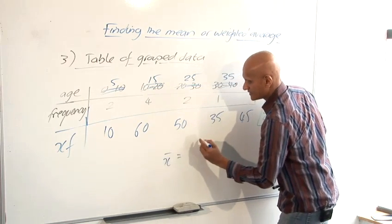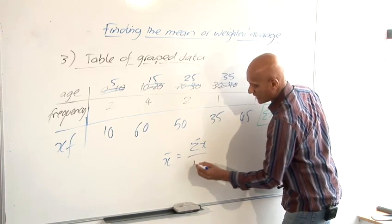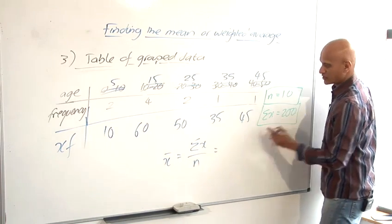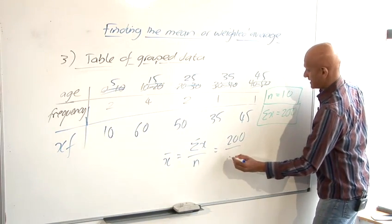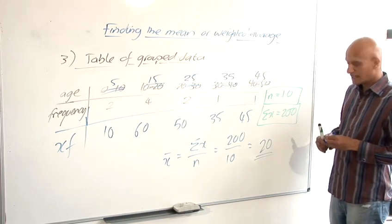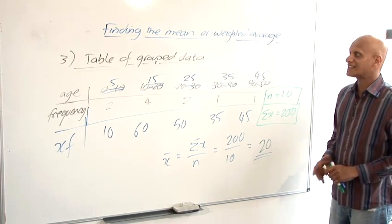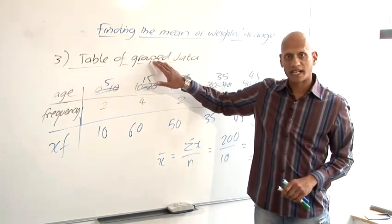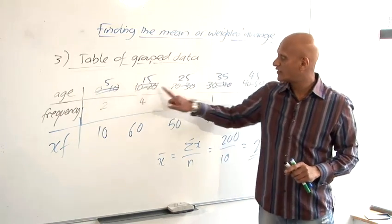x bar is sigma x over n, sigma x is 200, n is 10, and so that gives us our mean of 20. So essentially, the calculation is exactly the same as when we had a table of ungrouped data, except first of all, we have to find the mid values, and then we proceed in exactly the same way.